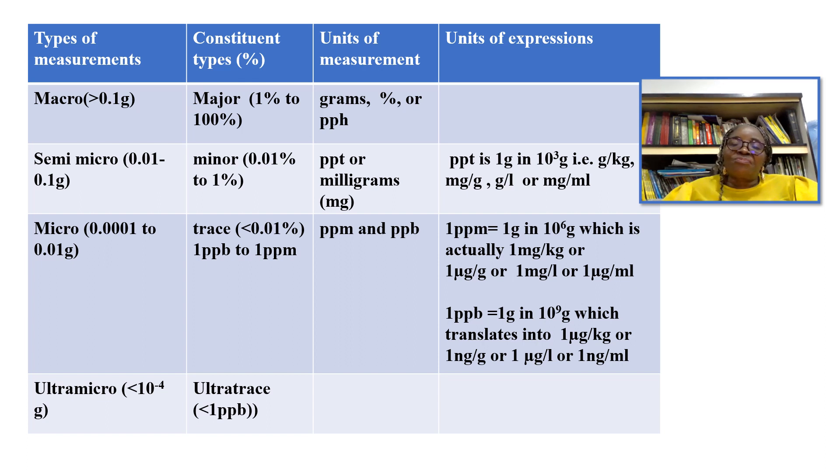What are the units of measurement? These different measurements are represented in different units like grams, percentage or parts per hundred where we measure macro, parts per thousand or milligrams where we measure semi-micro, and parts per million and parts per billion when we measure micrograms.